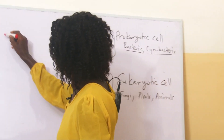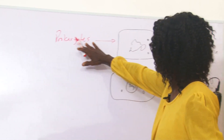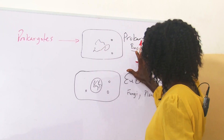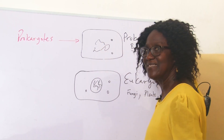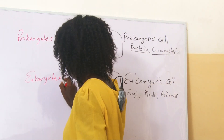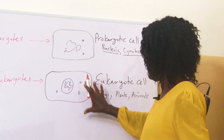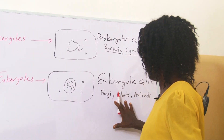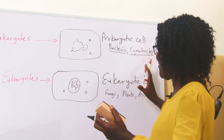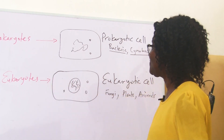Prokaryotes are organisms that have prokaryotic cells. They are bacteria and cyanobacteria. Eukaryotes are organisms that have eukaryotic cells. They are fungi, plants, animals — animal-like organisms or plant-like organisms. They are all eukaryotes.